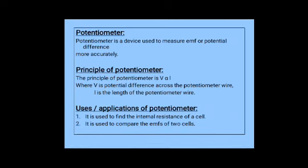Let us also see one more instrument — the potentiometer. A potentiometer is a device used to measure EMF or potential difference more accurately. Its principle is V is directly proportional to L, where V is the potential difference across the potentiometer wire and L is its length. The applications of a potentiometer are: first, it is used to find the internal resistance of a cell; second, it is used to compare the EMFs of two cells.